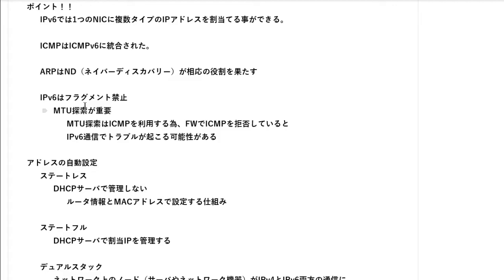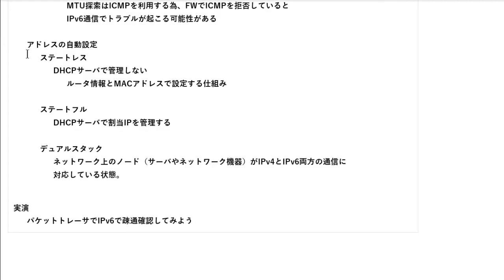最後にポイントをまとめます。IPv6では一つのNICに複数タイプのIPアドレスを割り当てることができます。IPv4のICMPはICMPv6に統合されています。IPv4のARPはIPv6ではND（ネイバーディスカバリー）がその役目を果たします。またIPv6の世界ではフラグメントが禁止されているので、MTU探索の機能がとても重要になります。MTU探索はICMPを利用するため、ファイアウォールでICMPを拒否設定しているとIPv6通信でトラブルが起こる可能性があるので注意が必要です。